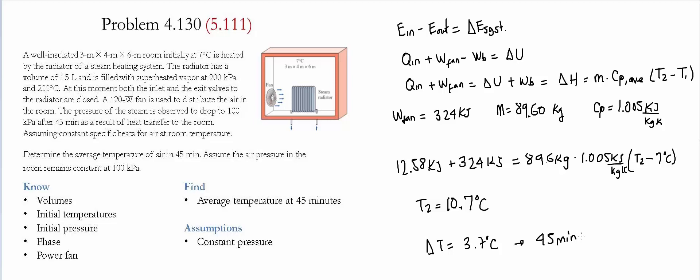The final temperature is considerably close to the initial temperature, which justifies using Cp evaluated at 7°C. If the temperature had been significantly higher, you would need to perform a trial-and-error process: find the average Cp at the new temperature, redo the calculation for T2, and repeat until T2 is no longer significantly affected by the updated average Cp.